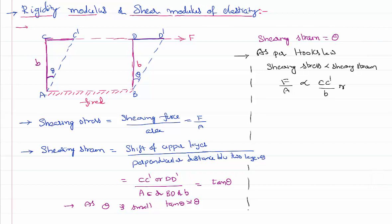Or of course, in the place of theta, I can write CC dash by B also where eta is the proportionality constant called rigidity modulus. So I can write rigidity modulus eta as force by area into theta.